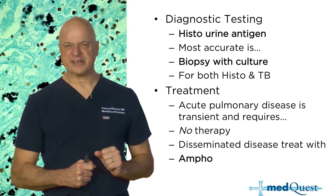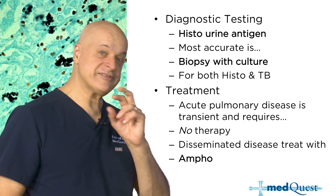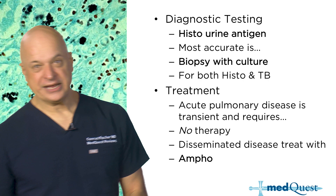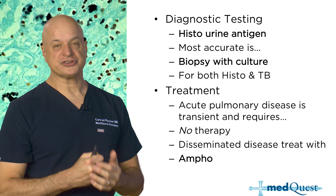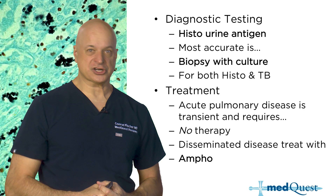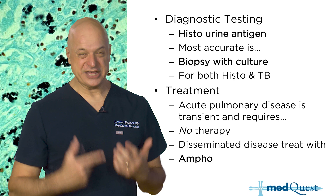Cryptococcus does not have the 1,3-glucan linkage that the echinocandins target. The echinocandins — caspofungin, micafungin, anidulafungin — are terrific drugs for neutropenic fever and for candida, but useless for the dimorphic fungi because they don't have that 1,3-glucan linkage in their cell wall.